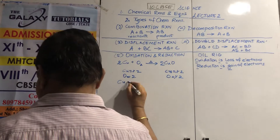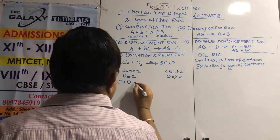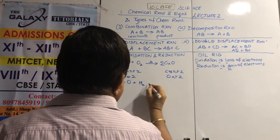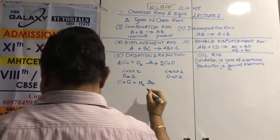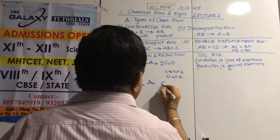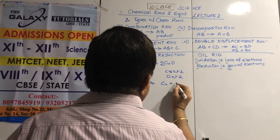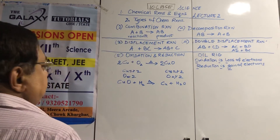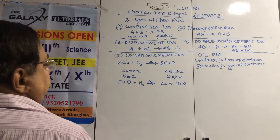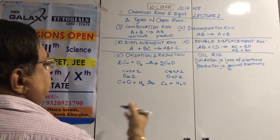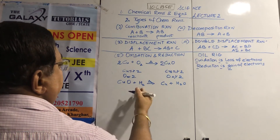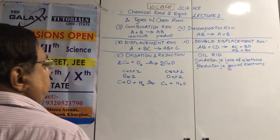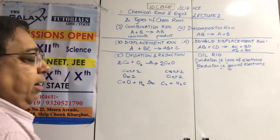Next: copper oxide plus hydrogen, when heated, gives copper plus water. The equation is already balanced — CuO: Cu=1, O=1; H2: H=2; Cu=1, H2O: H=2, O=1. No changes needed.